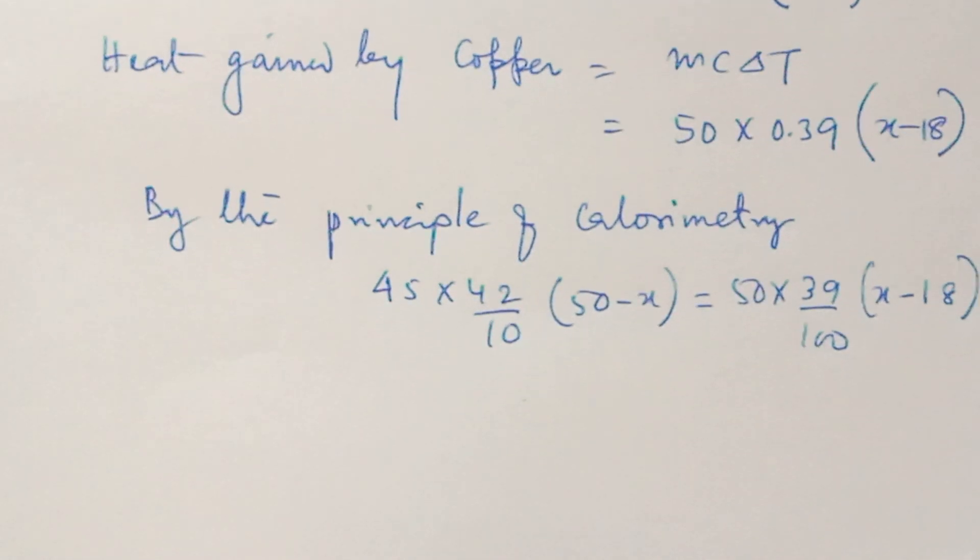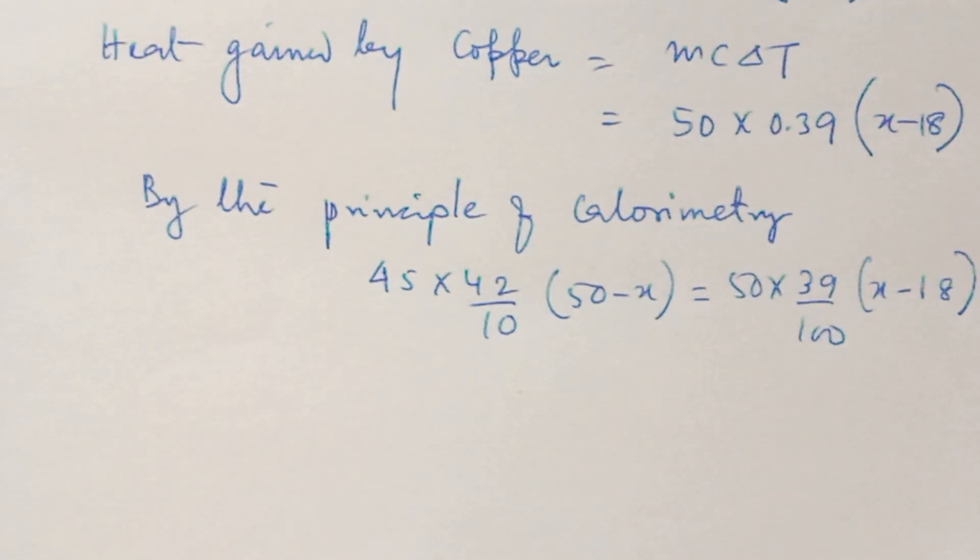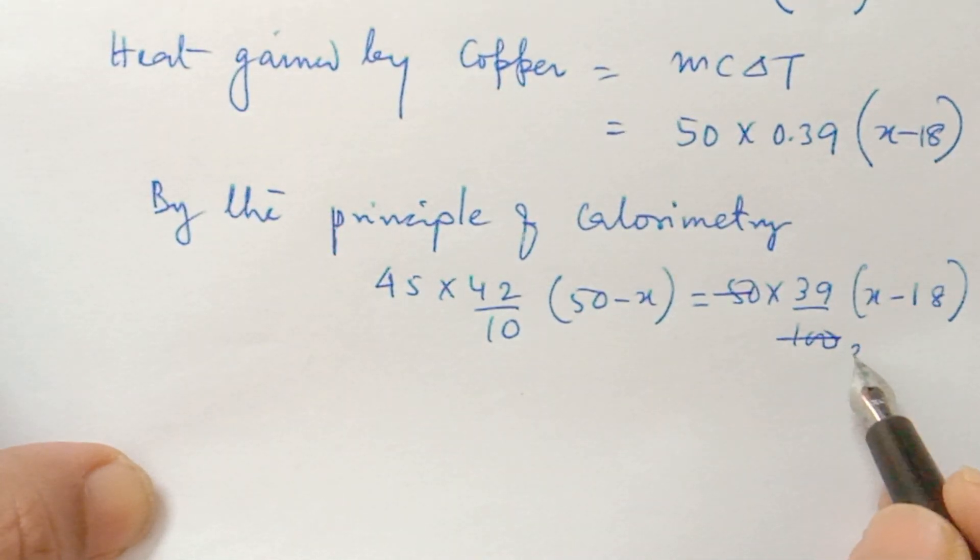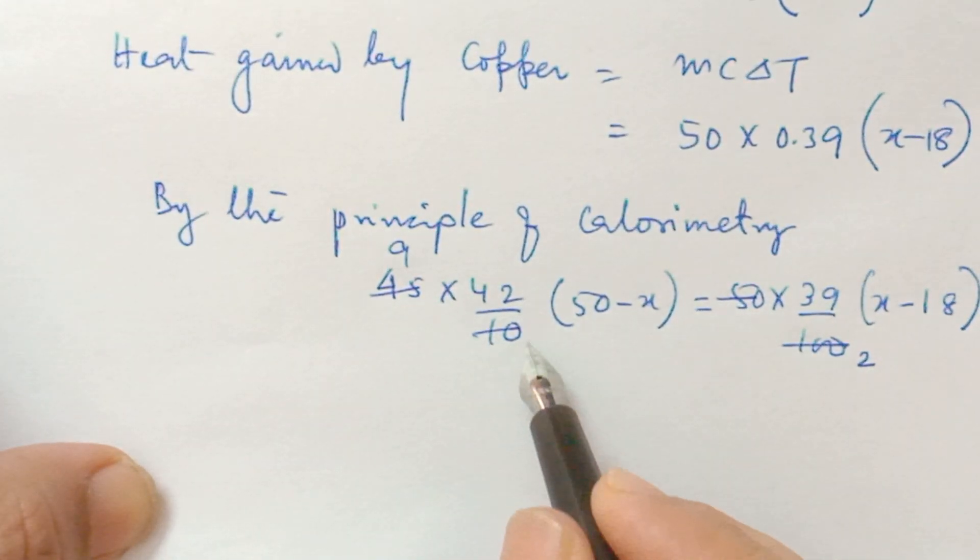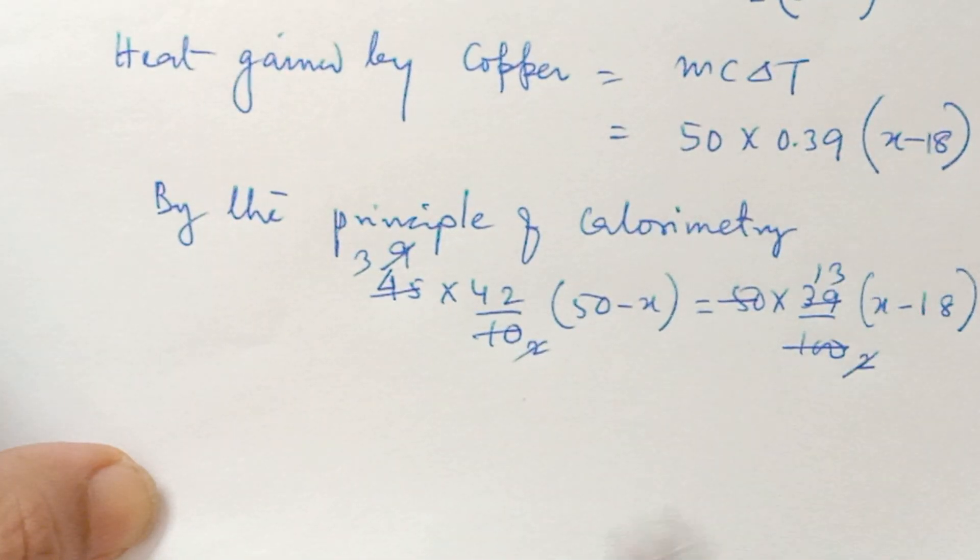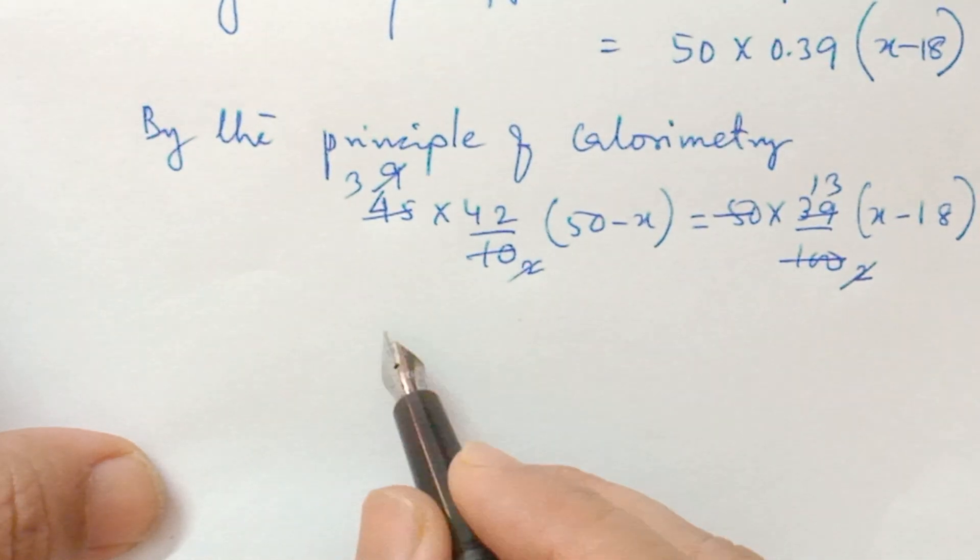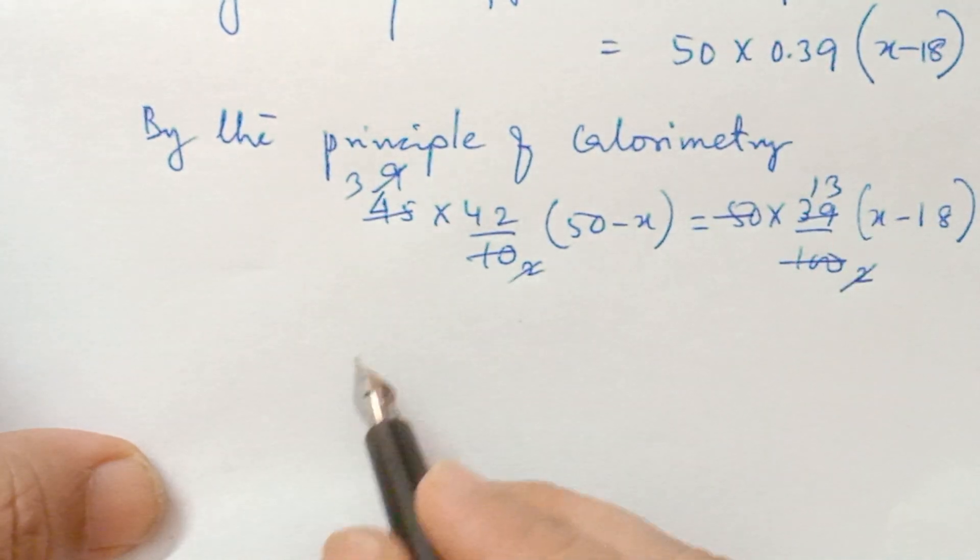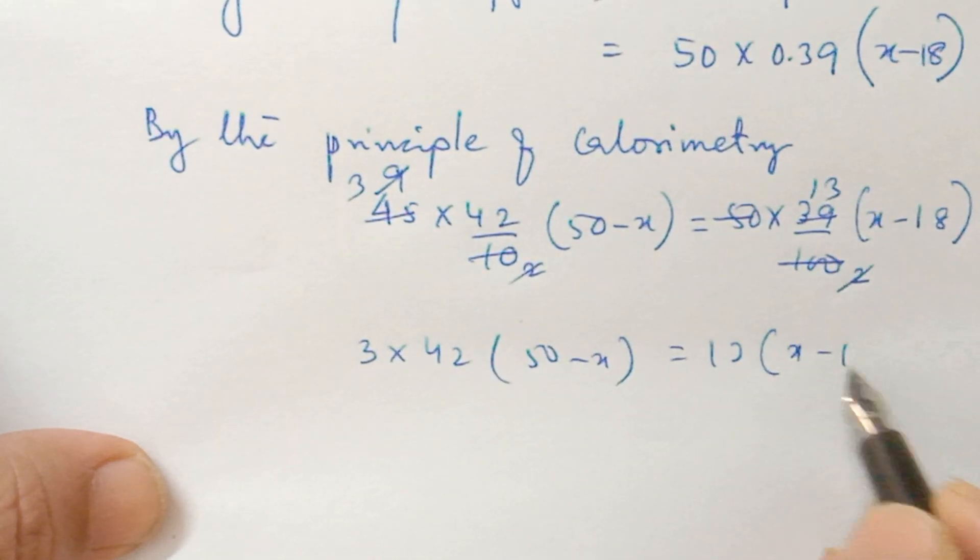Now mathematically solve this equation. You can cancel. This becomes 3 into 42, 50 minus x, equals 13 into x minus 18. This is the simplified equation. So 126, 50 minus x, equals 13 x minus 18.